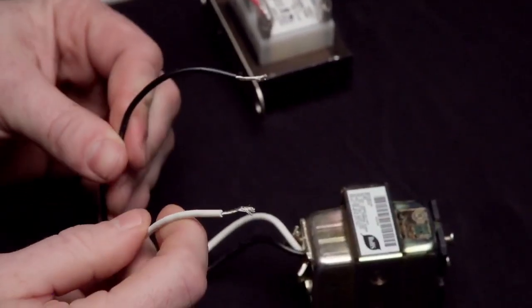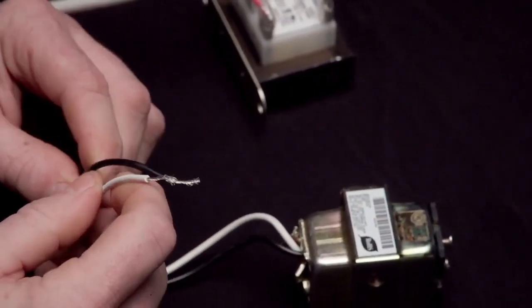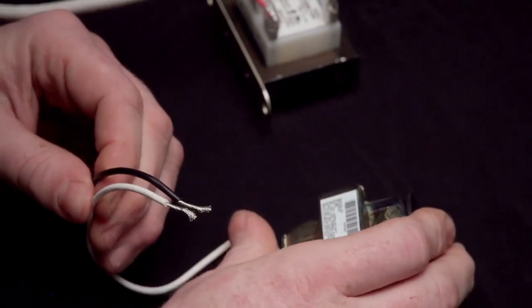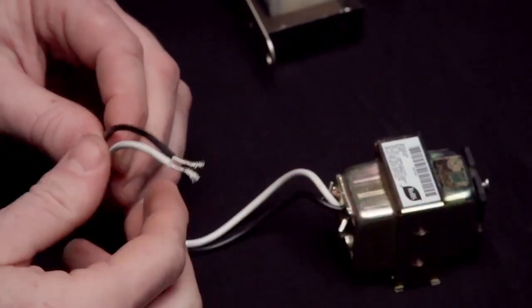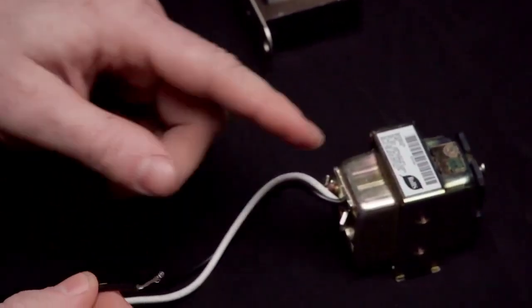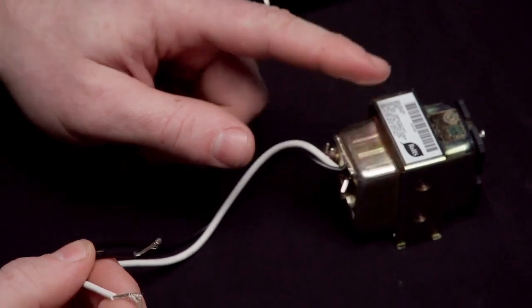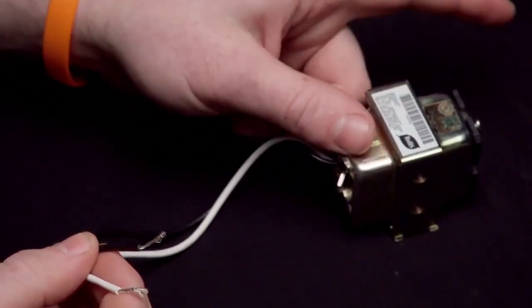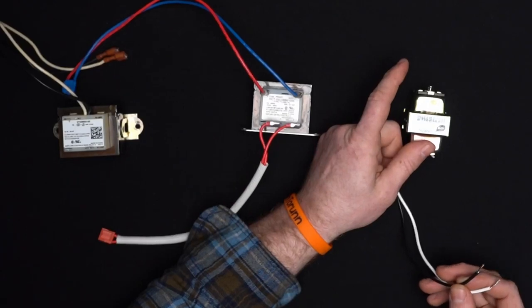If we look at this side, this should be our primary, and it looks like, reading the thing, 120 volts AC going to this. So we will take 120 volts coming into the unit, and then this will be our load, and then going out will be 24 volts AC, or low voltage.